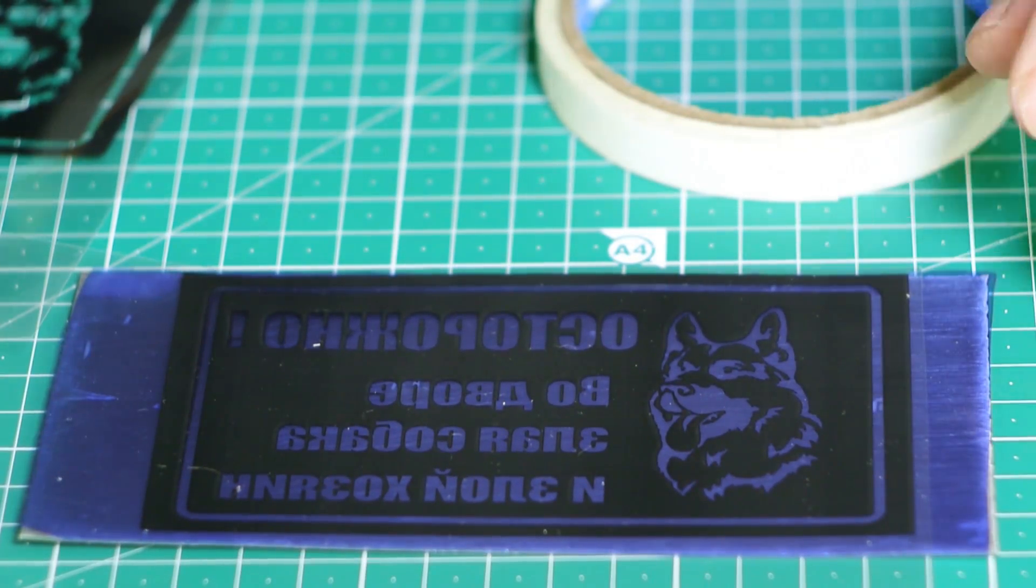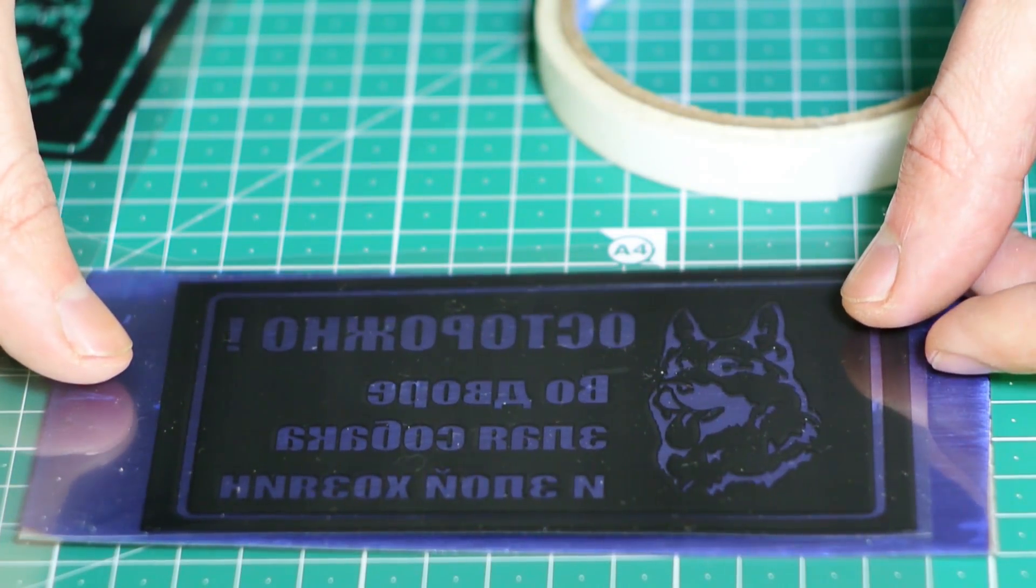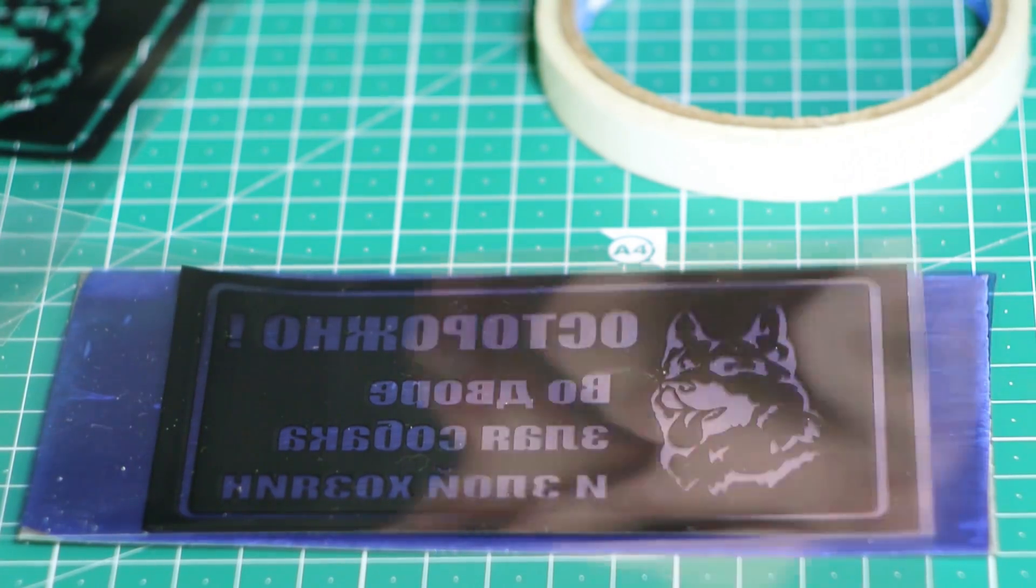Then we fix the template. If the printer did the job poorly and the ink is not opaque, you can use a sandwich of several layers.